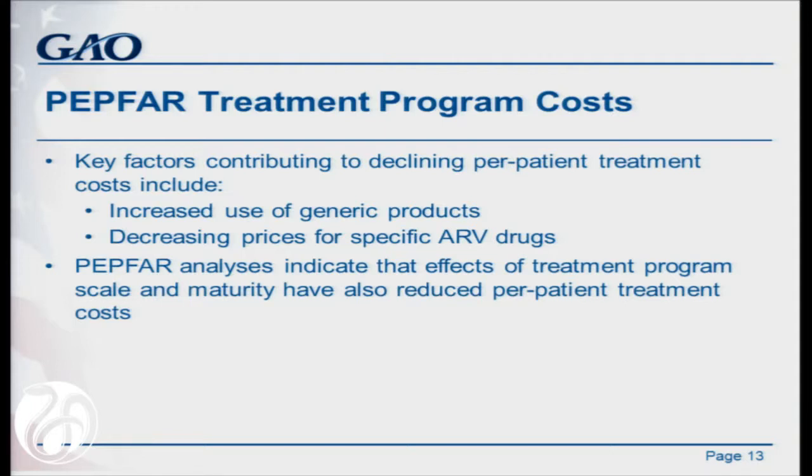A second reason for those declining per patient treatment costs is decreasing prices for certain products. In our report, we did an analysis of what happened when the program switched from Stavudine to Tenofovir based on WHO recommendations. While the Tenofovir-based regimen was originally more expensive, it has declined to be on average with other regimens now. There were also some non-ARV drug costs that contributed to bringing it down.